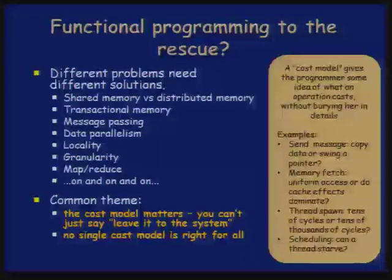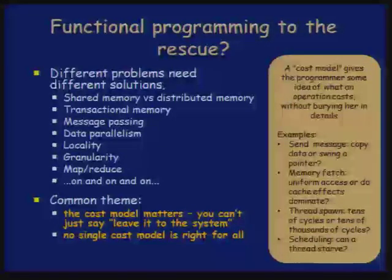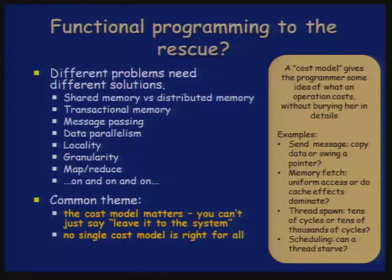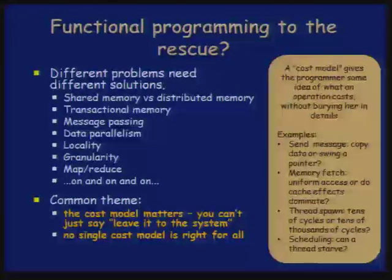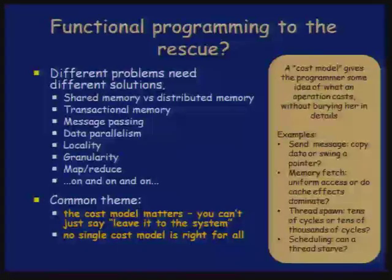Another thing I want to mention about parallelism by way of setup is that there are different solutions to different problems. Concurrency is too variegated and complicated to be dealt with by a single mechanism or language paradigm. There's a whole bunch of mechanisms — shared memory, locks and condition variables, transactional memory, message passing — and they're good for different things. Another key role is the cost model: if you're going to write a parallel program, you must have a notion of how expensive things are.